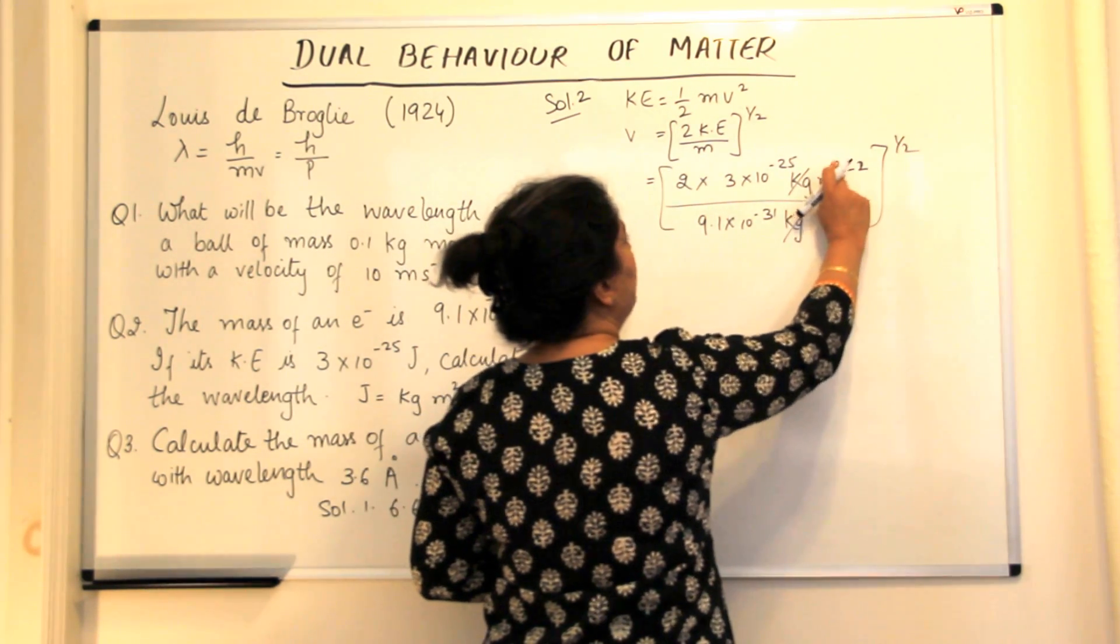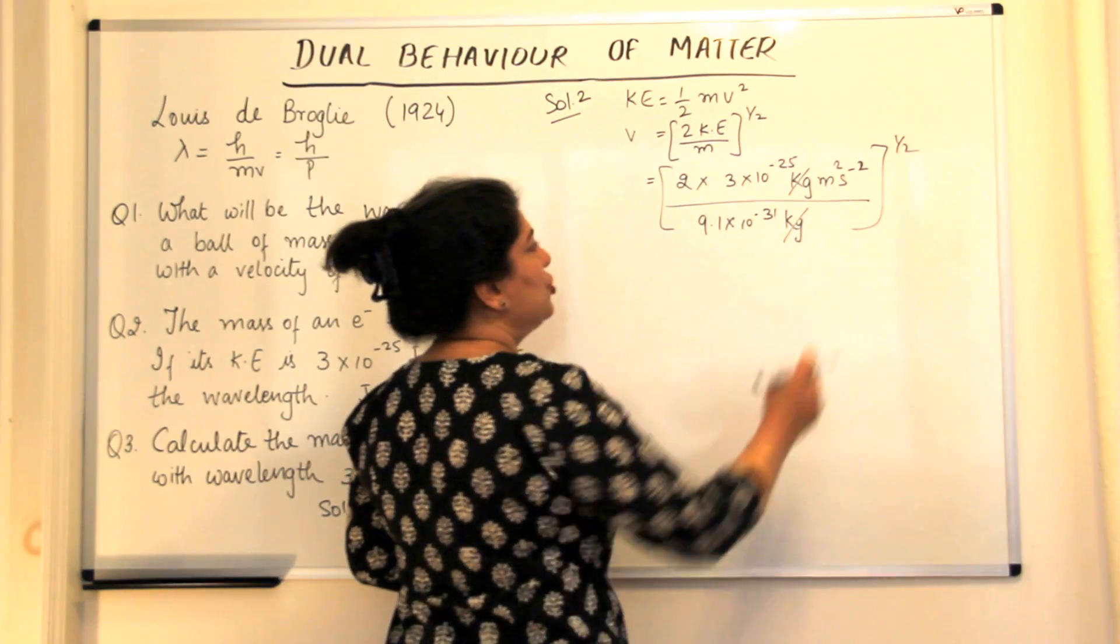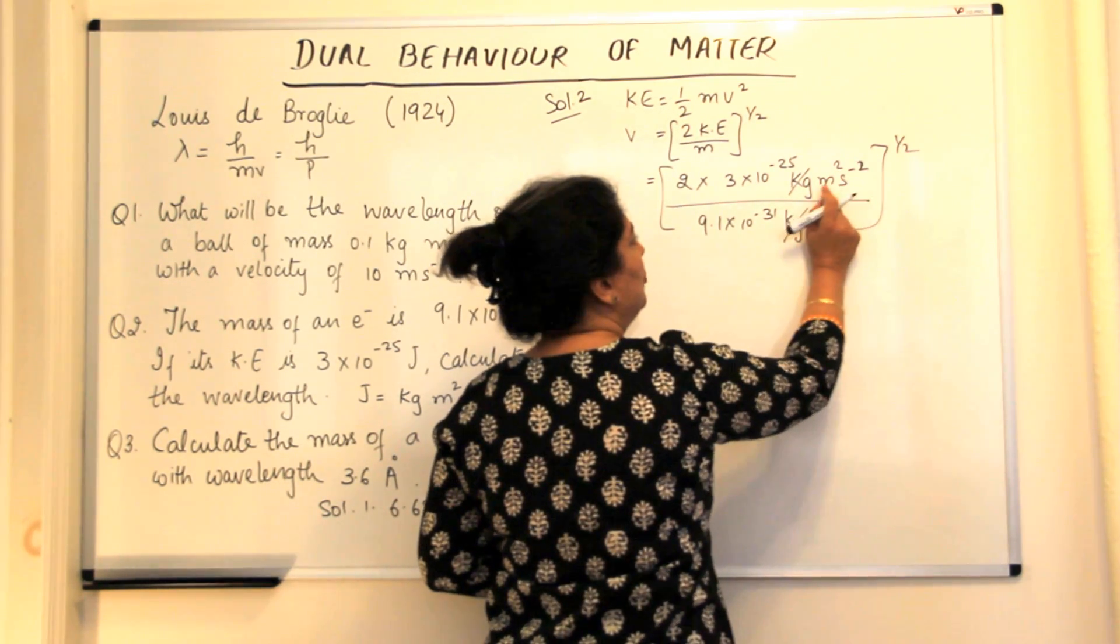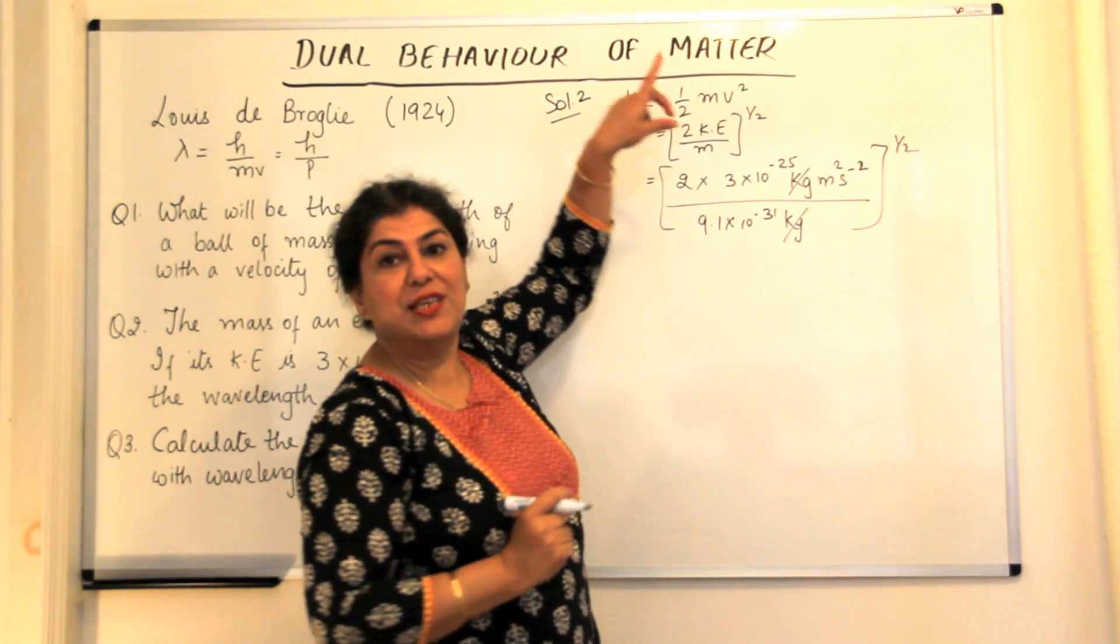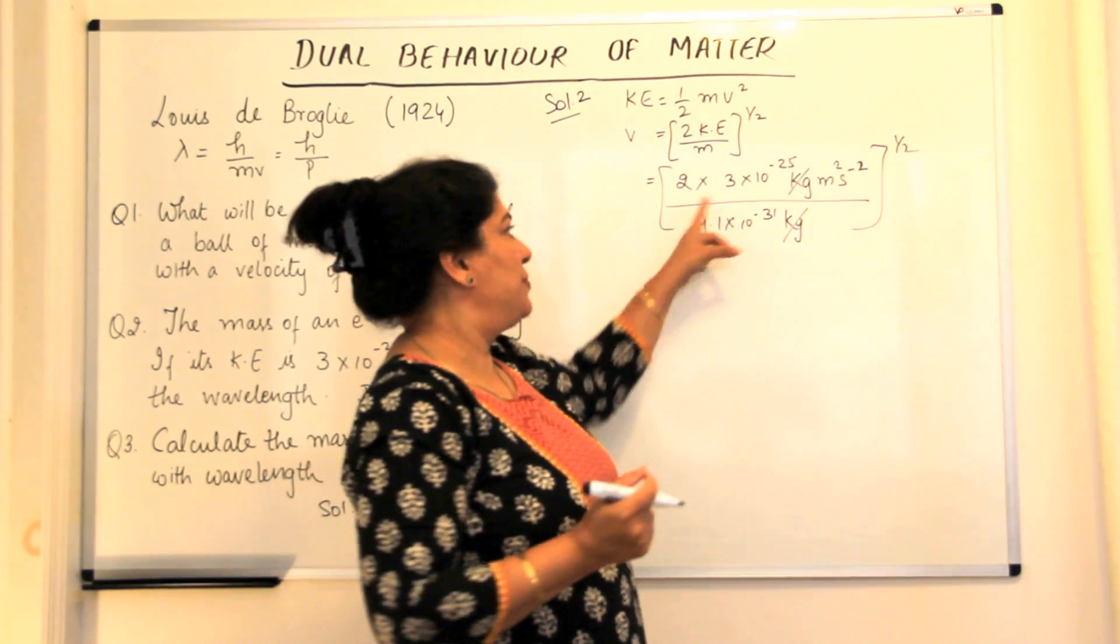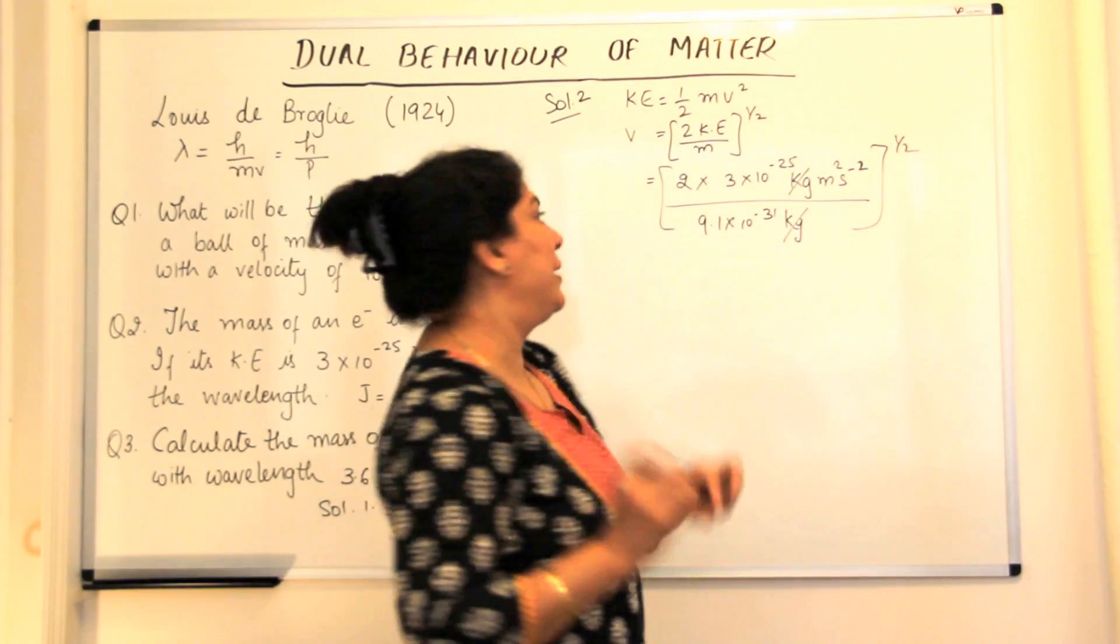And the m to the power 2 and s to the power minus 2. If you divide these by 2, you will get m and s minus 1. And velocity, the unit of velocity is meters per second.